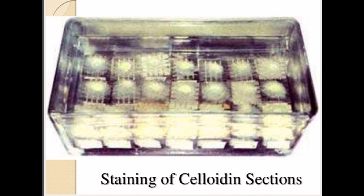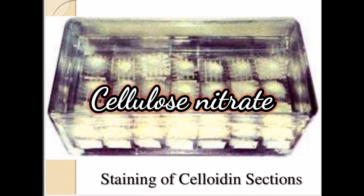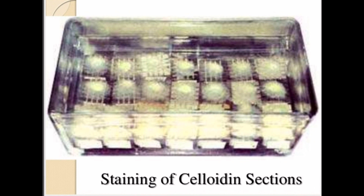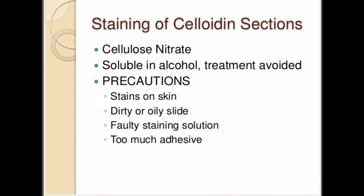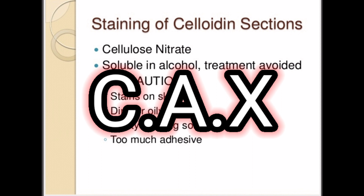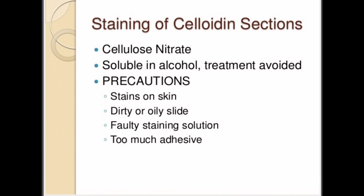For staining of celloidin sections, sections must be transferred from one solution to another with a bent glass rod, as in frozen sections, but because they are thicker they may be handled by forceps instead. Cellulose nitrate or celloidin is soluble in absolute alcohol; hence treatment with absolute alcohol alone should be avoided during dehydration and clearing of stained sections. Sections treated with 95% alcohol may be transferred to a mixture of equal parts of chloroform, absolute alcohol, and xylene, and then treated with xylene and mounted in XAM.